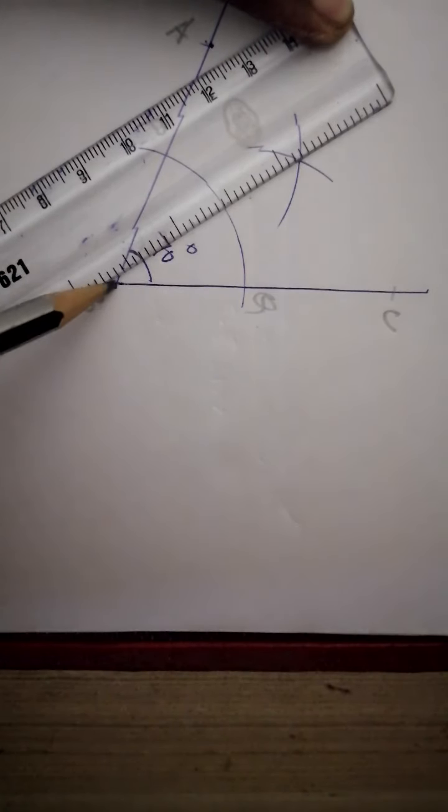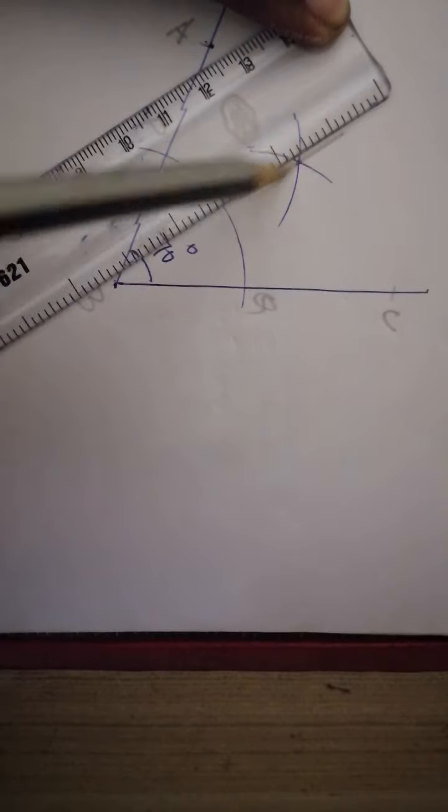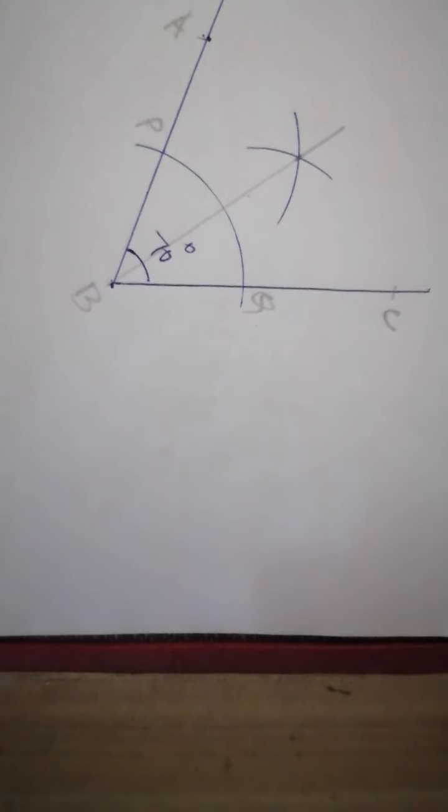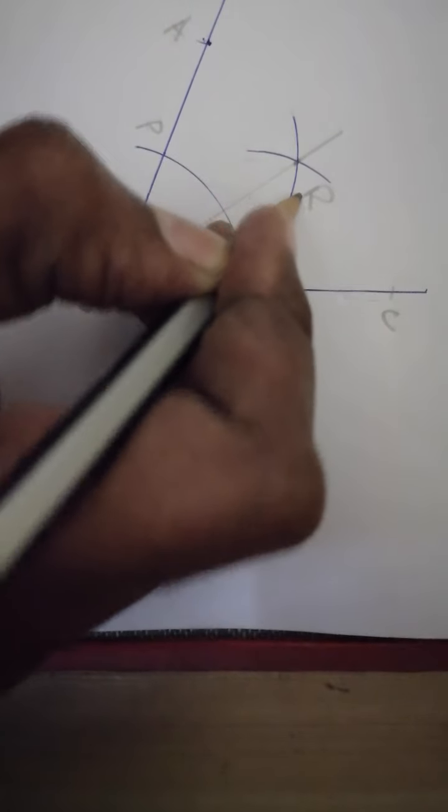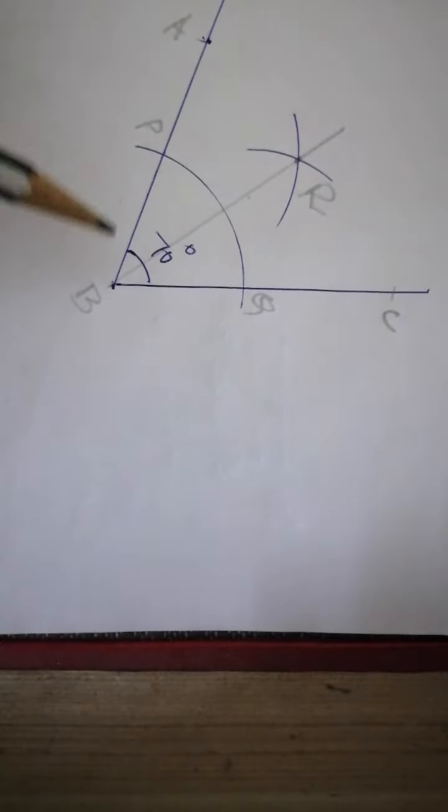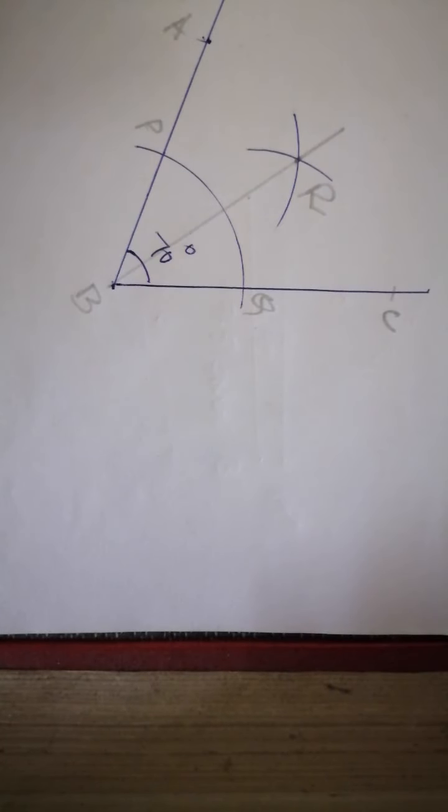Join this vertex and this point. Now, this line, that is, if this point is R, then BR is the bisector of the given angle.